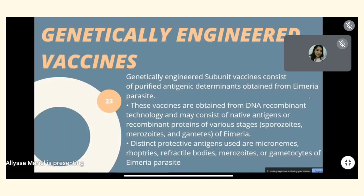Genetically engineered subunit vaccines consist of purified antigenic determinants obtained from Eimeria parasites via DNA recombinant technology. They may consist of native antigens or recombinant proteins from various stages such as sporozoites, merozoites, and gametes. Distinct protective antigens used include micronemes, rhoptries, refractile bodies, merozoites, and gametocytes of Eimeria parasites.